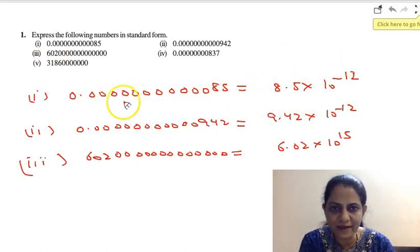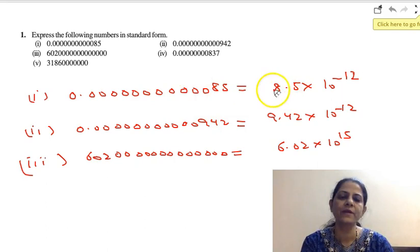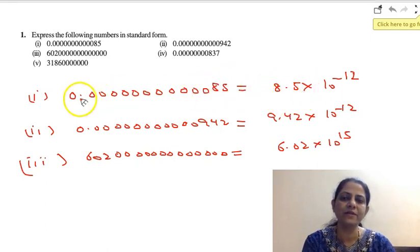You can see that there are 11 zeros before 8. So in standard form, we can write it as 8.5. I am shifting this decimal to here, so I can write it as 8.5 × 10^-12.